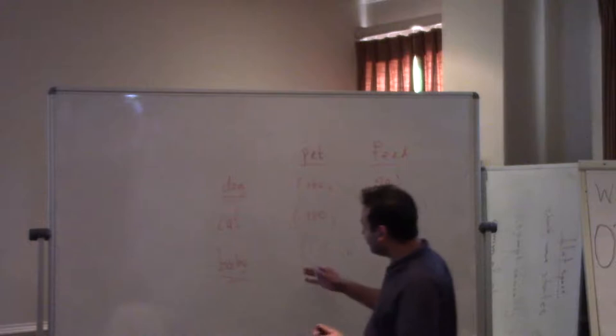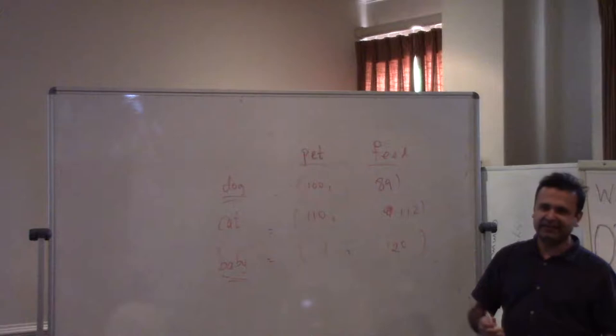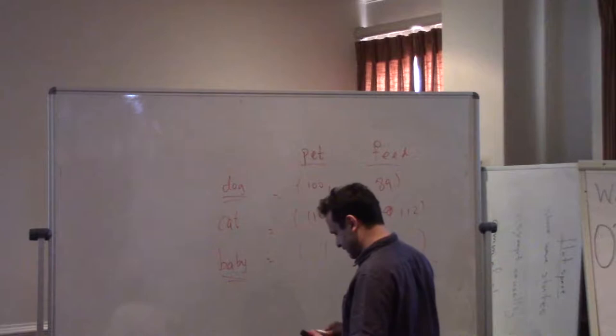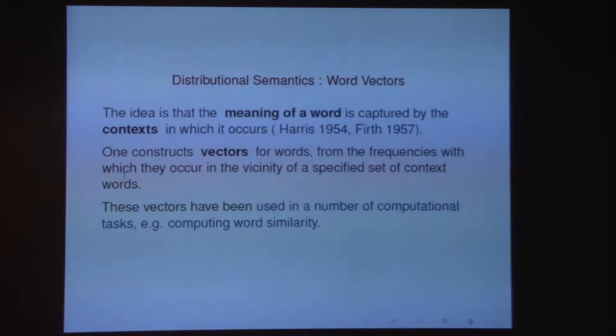The idea is that you can replace the word by these vectors, and that these vectors know something about the meaning of the word. We're going to try and work with these vectors to understand meaning. You build vectors and you try to do mathematics or computations with the vectors to extract the meaning of things. For example, these vectors can be used in computational tasks such as comparing word similarity.